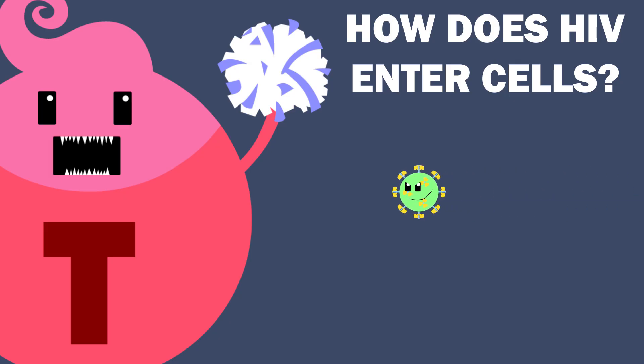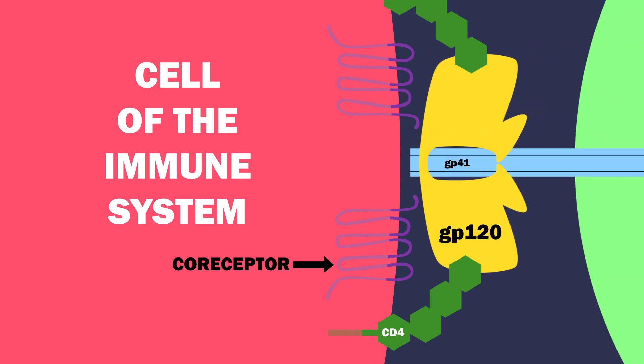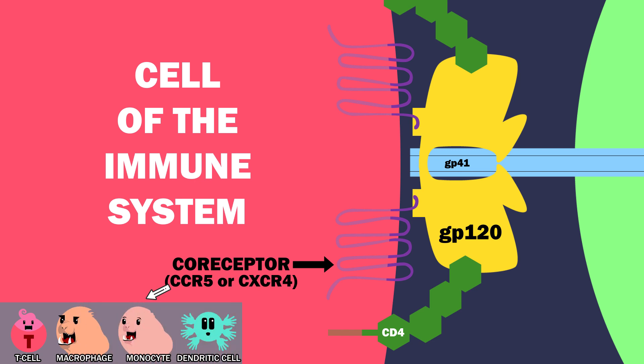How does HIV enter cells? GP120 binds the CD4 glycoprotein. This triggers a conformational change that exposes binding sites for a co-receptor, either CCR5 or CXCR4. CCR5 is found on T cells, macrophages, monocytes, and dendritic cells, while CXCR4 is found exclusively on T cells.